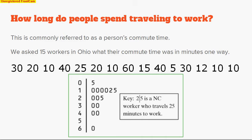The example is: how long do people spend traveling to work? This is commonly referred to as a person's commute time. We asked 15 workers in Ohio what their commute times were in minutes one way. Here's all of our data, and I conveniently put it into a nice stem-and-leaf plot. We see a little key there explaining that a 2 and a 5 means that it takes 25 minutes for those people to get to work.